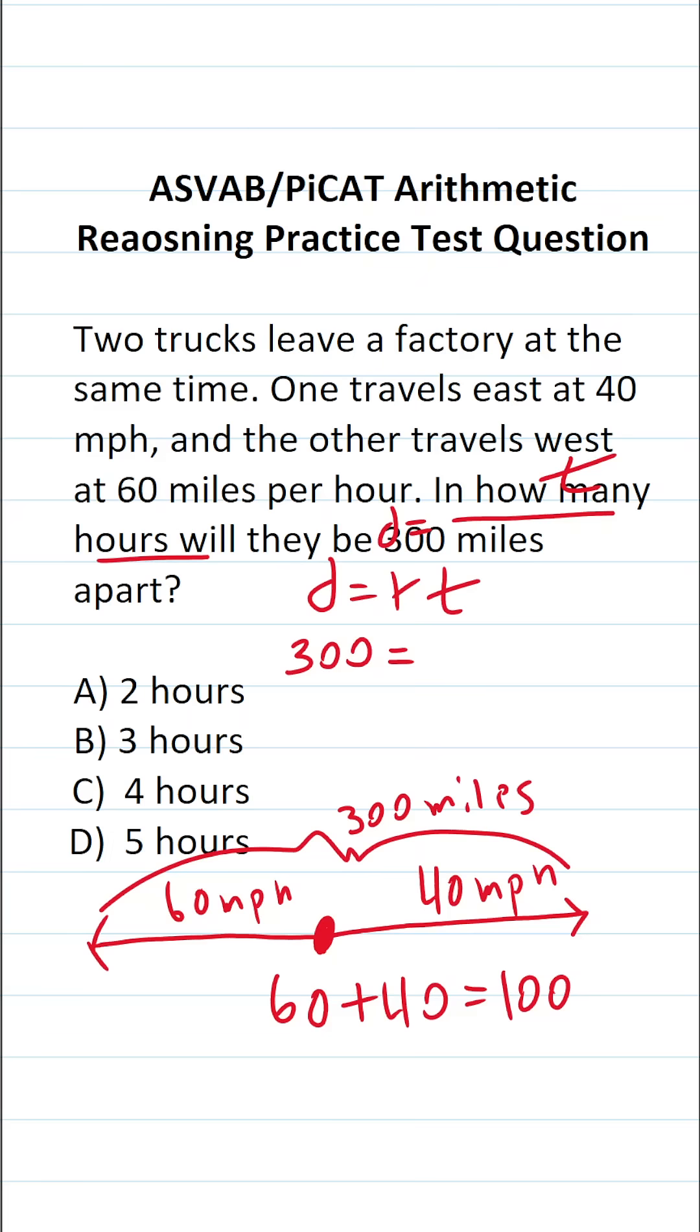They're driving away from each other at a combined rate of 100 miles per hour. So our rate is 100, and this becomes 300 equals 100 times t.